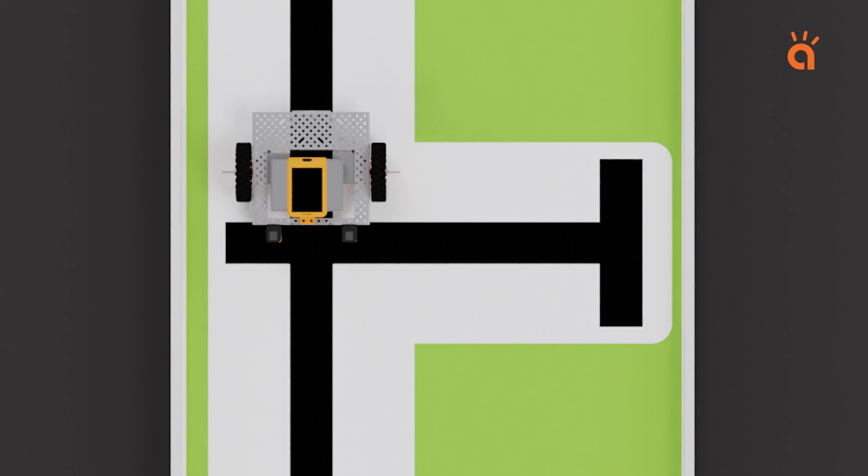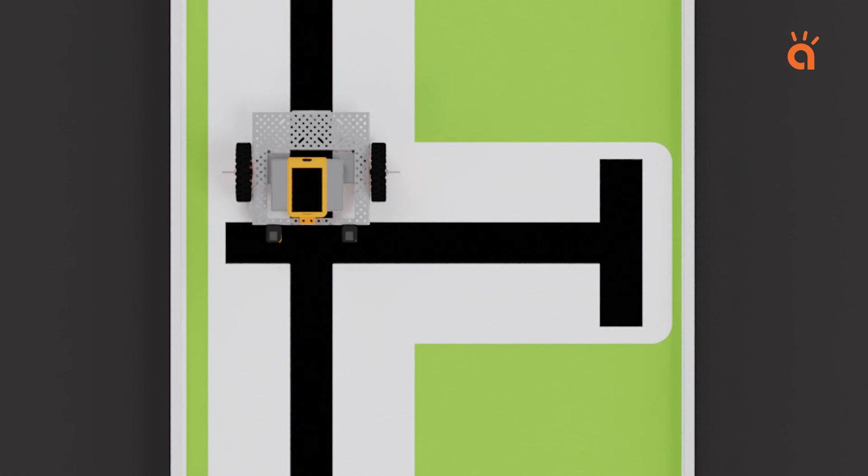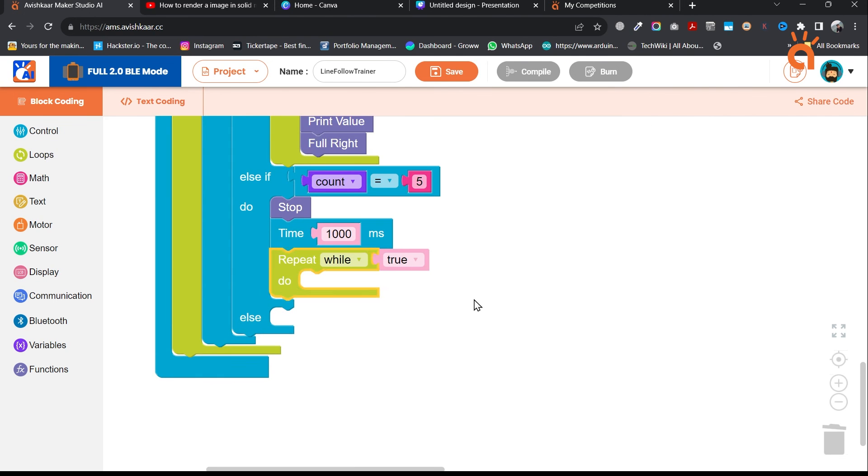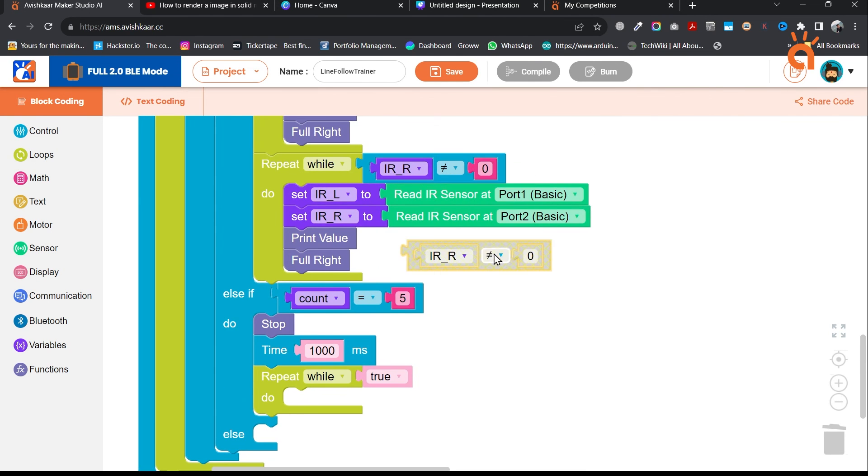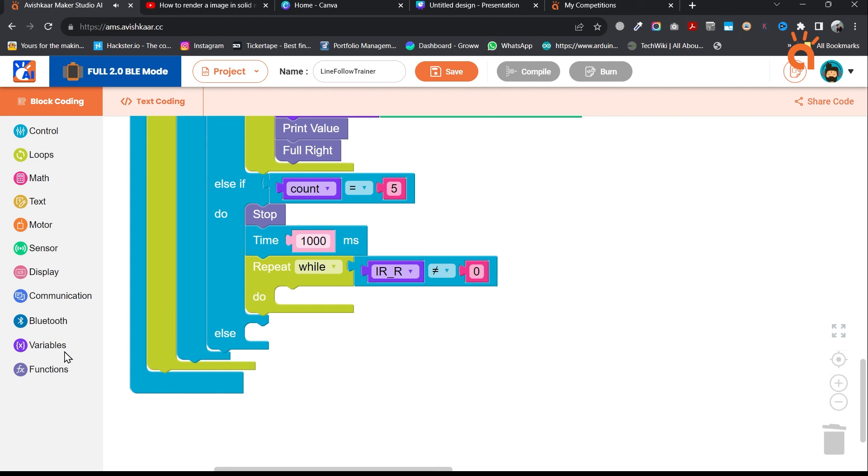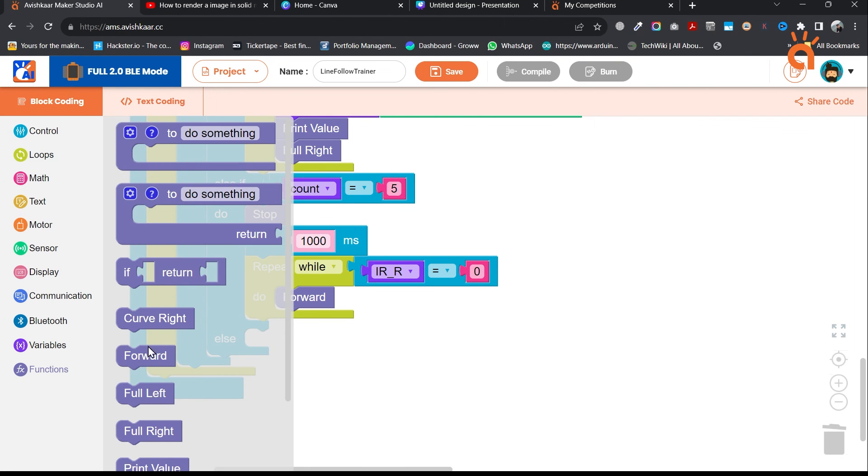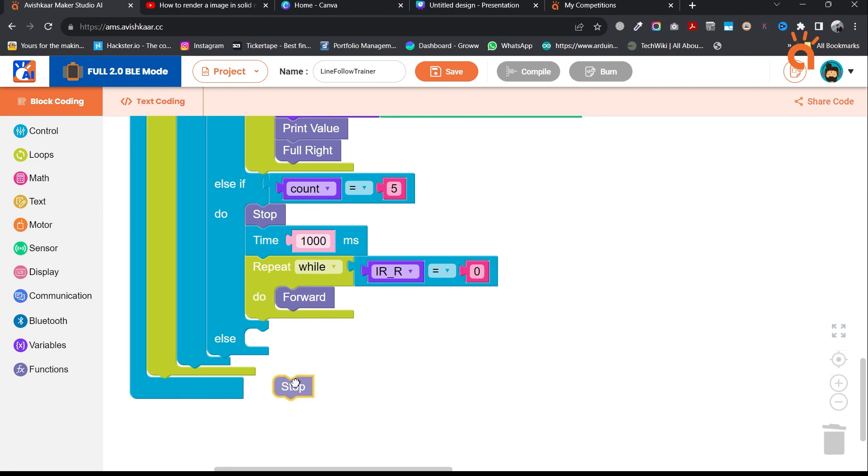If count is equal to 5. This intersection requires a time based action. So here, we can use a time delay to stop the robot along with the loop to move forward until the sensor detects white. So, this robot will move forward until the sensor detects white. And lastly, we can finally stop our robot to complete the arena, when count is equal to 6.